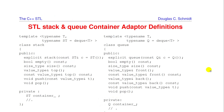Here's a stack container adapter example. It's parameterized by type T with a default implementation using a deque of T. You don't get deque methods exposed — only stack methods like top, push, and pop. Note that pop and top are separate operations for exception-handling reasons: you don't want pop to both remove and return the item, because that can cause exception issues.